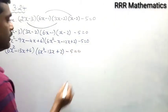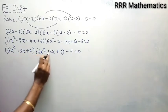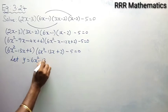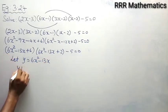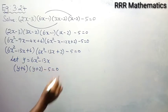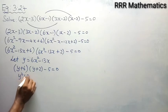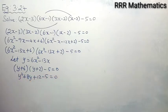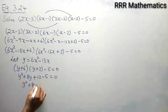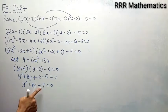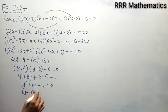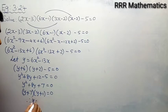Since 6x² - 13x appears in both factors, let y = 6x² - 13x. The equation becomes (y + 6)(y + 2) - 5 = 0, which expands to y² + 8y + 12 - 5 = 0, giving y² + 8y + 7 = 0. Factorizing: (y + 7)(y + 1) = 0, so y = -7 or y = -1.